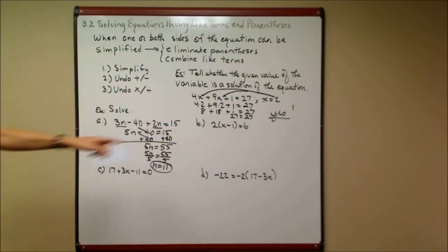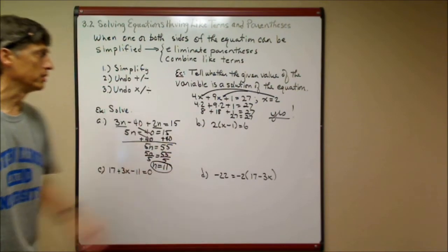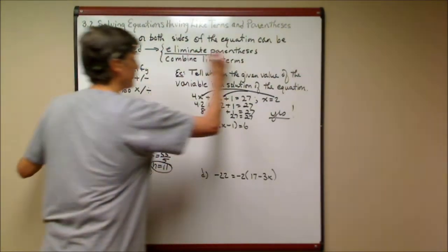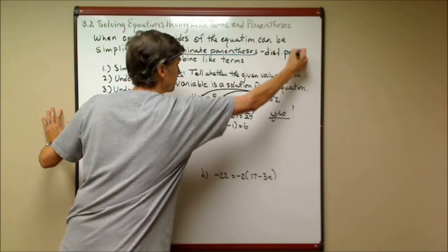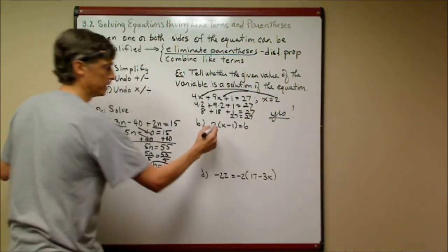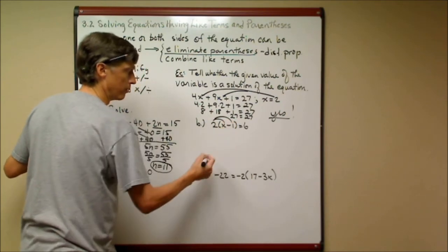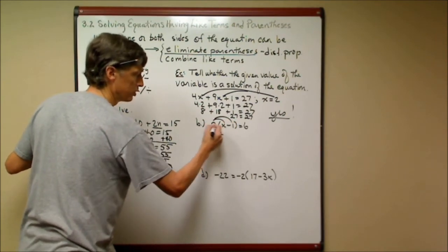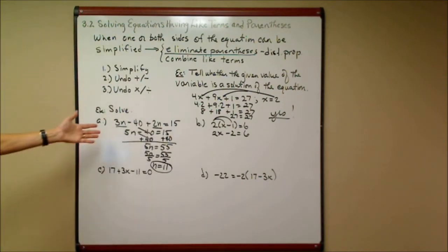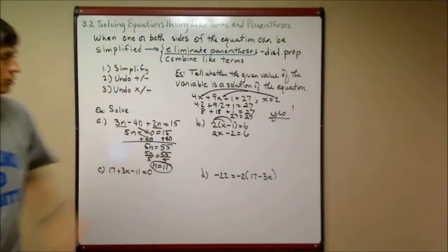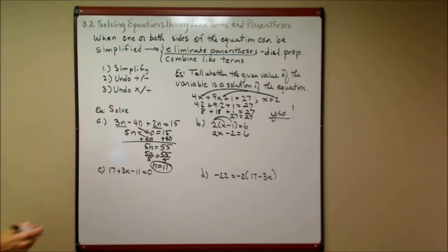Now, in the next example, I don't have like terms, but I have parentheses. So this is where, when we eliminate the parentheses, we use the distributive property. If you've forgotten, we use the distributive property to eliminate parentheses like this. So I'm going to multiply through. 2 times x is 2x. 2 times minus 1 is minus 2, equals 6. Now, just like the last one, I turned this equation into a nice little two-step equation, like we did in section 1.